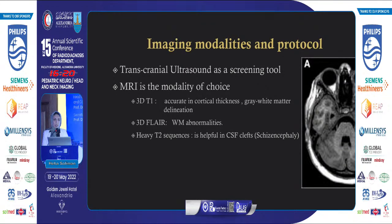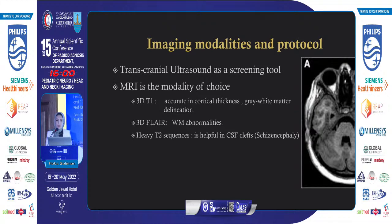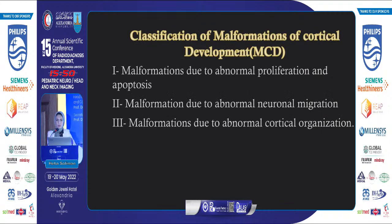Regarding imaging modalities, transcranial ultrasound is considered a screening tool, but the definitive tool is MRI. 3D T1 is of utmost importance, allowing assessment of cortical thickness and the gray-white matter junction. 3D FLAIR shows white matter abnormalities, and heavy T2 sequences are very helpful in cases of CSF clefts such as schizencephaly. The MCD classification is based on disruption of major embryological processes: abnormal proliferation and apoptosis, abnormal neuronal migration, and abnormal cortical organization.